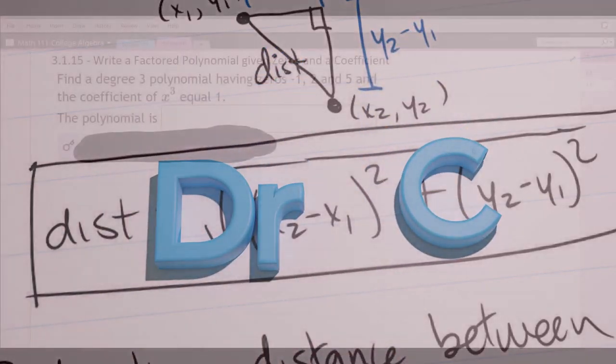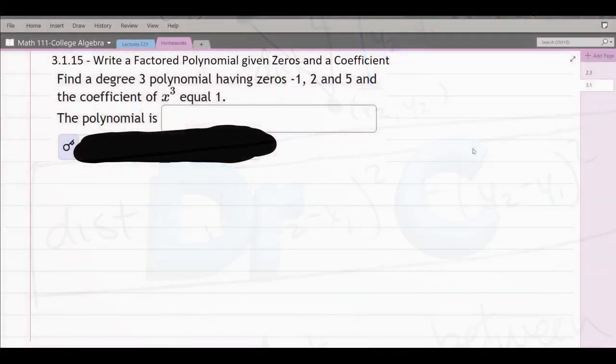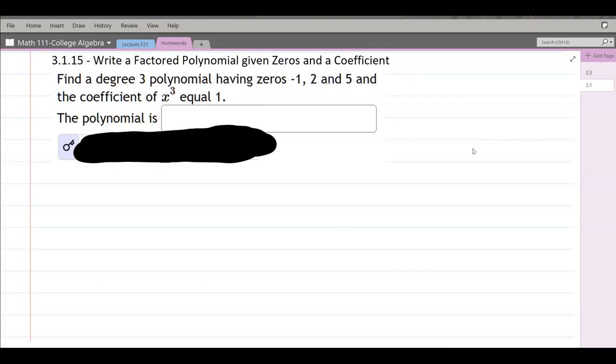This question is degree 3 polynomial. They give us three different zeros and they give us the coefficient of x cubed equals 1.